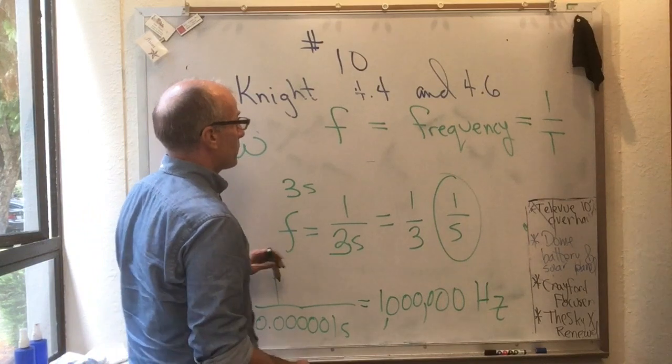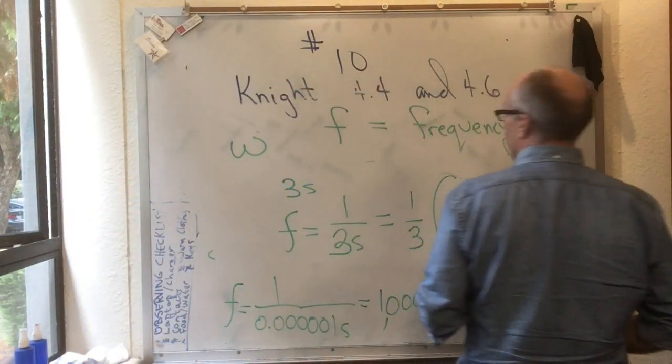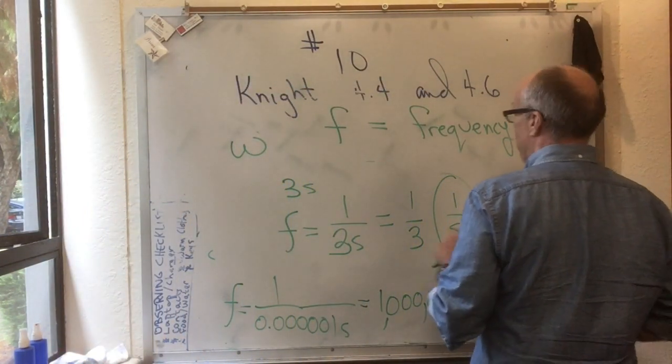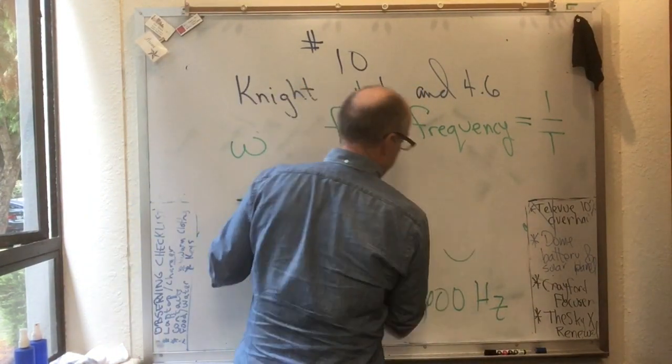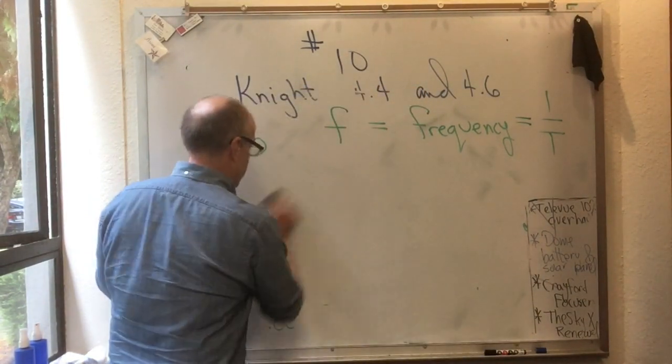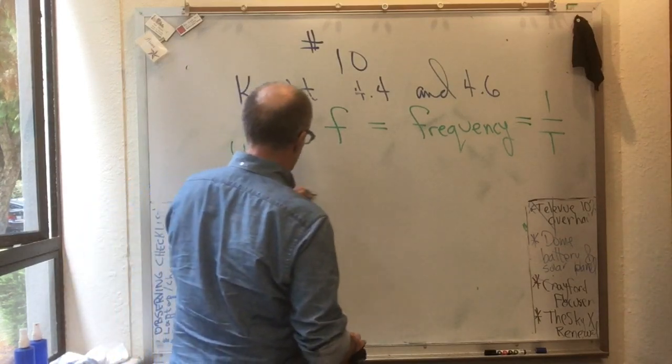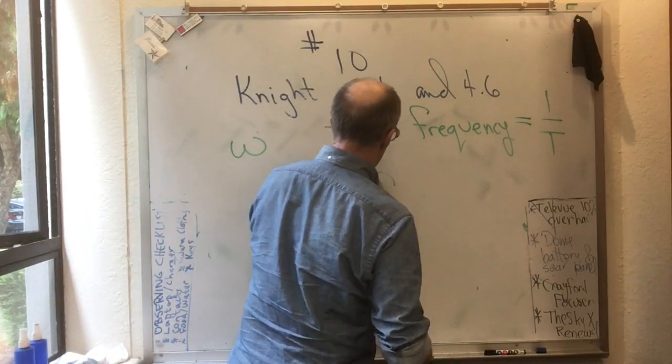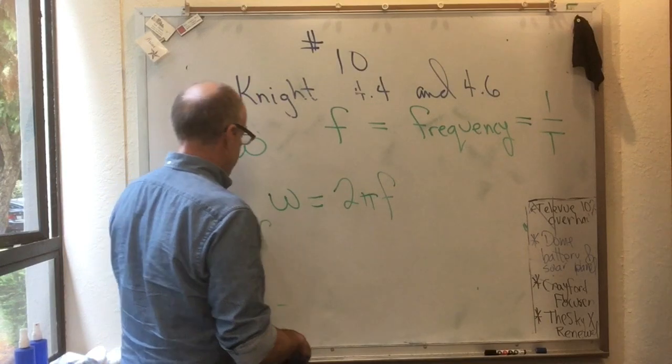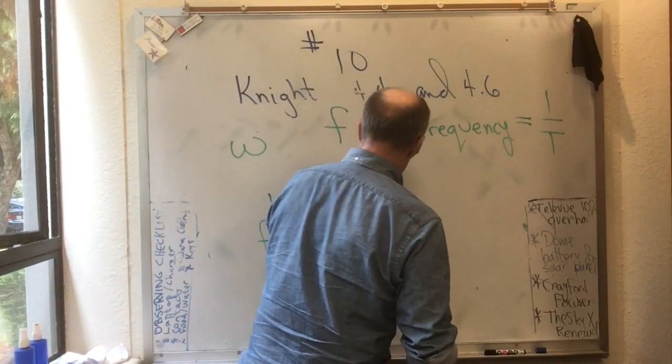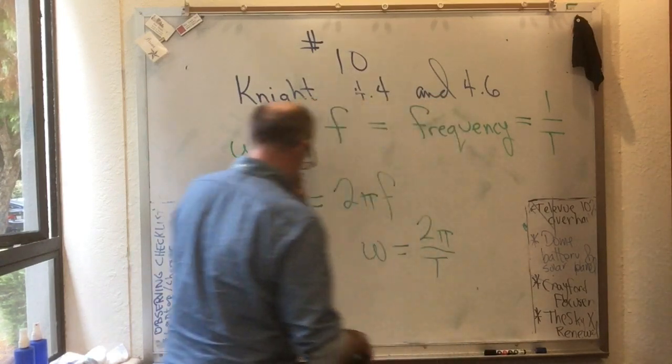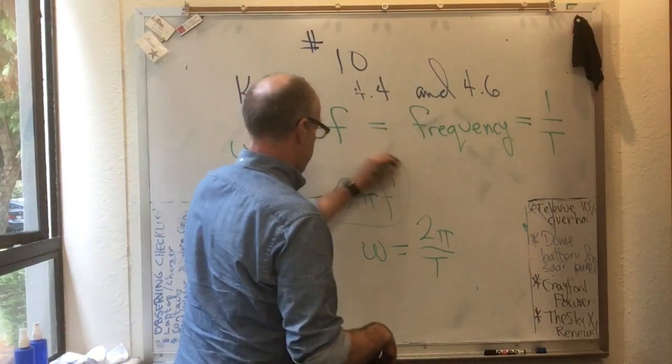Okay, so I've introduced frequency, angular frequency, period. There's one other formula you can get from the two that I've already got there, which is that the angular frequency omega is 2πf. And you can get that by saying that f is 1 over T, but also omega was 2π over T. And from those two, you get this.